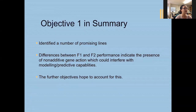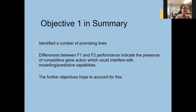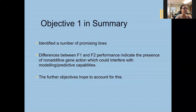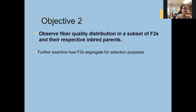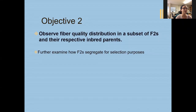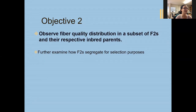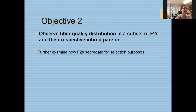In summary for objective one, we identified a number of promising lines. The differences between F1 and F2 performance indicate the presence of non-additive gene action which could interfere with modeling or predictive capabilities, and the further objectives hope to account for some of that non-additive variation. Moving onward to objective two, we wanted to observe fiber quality distribution in a subset of F2s and their respective inbred parents, and further examine how those F2s segregate for selection purposes.